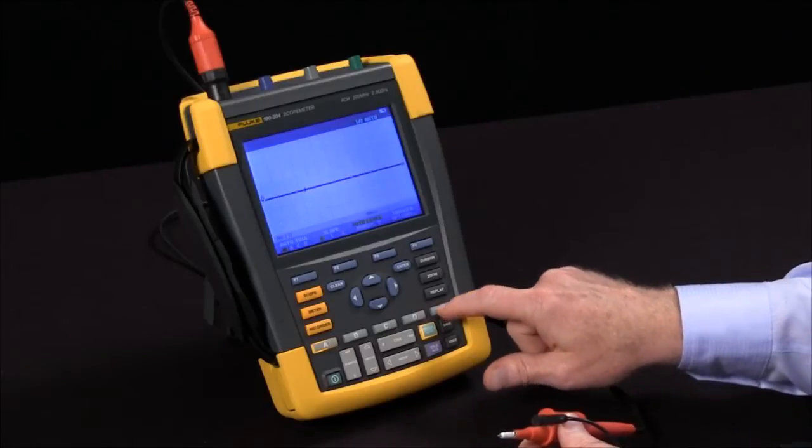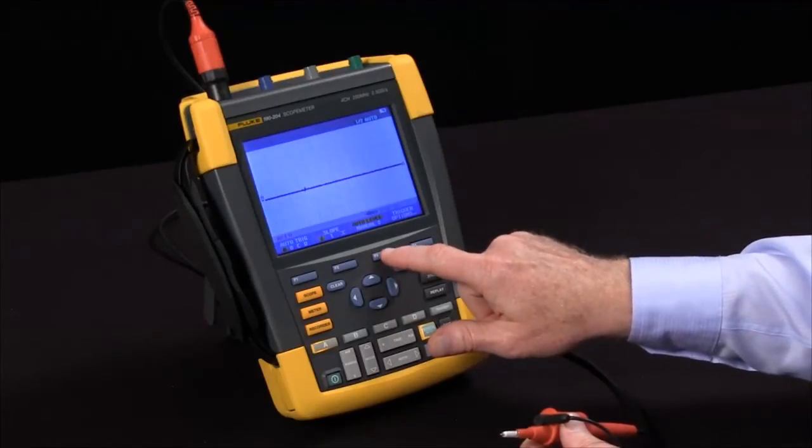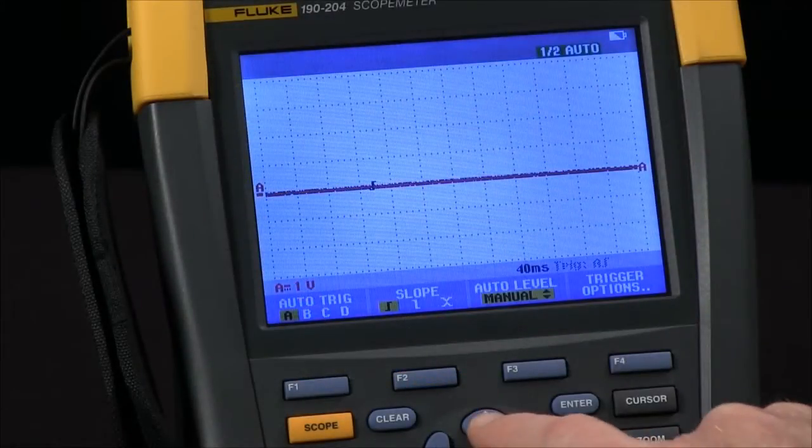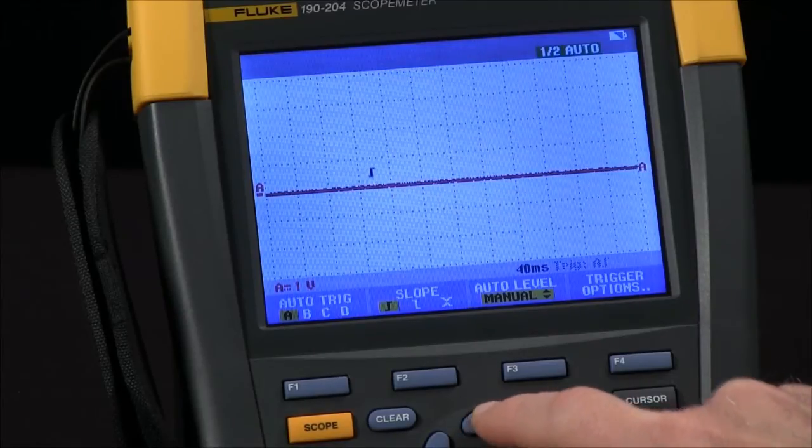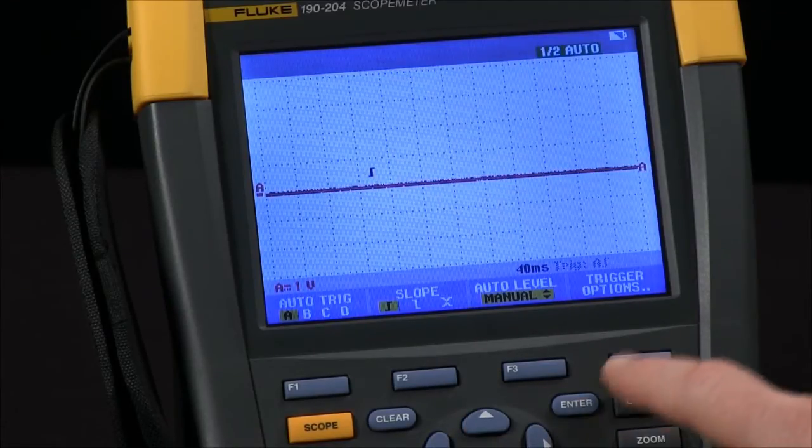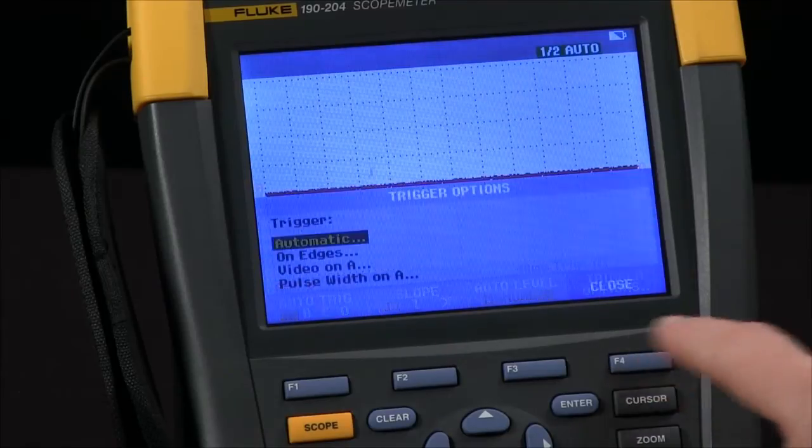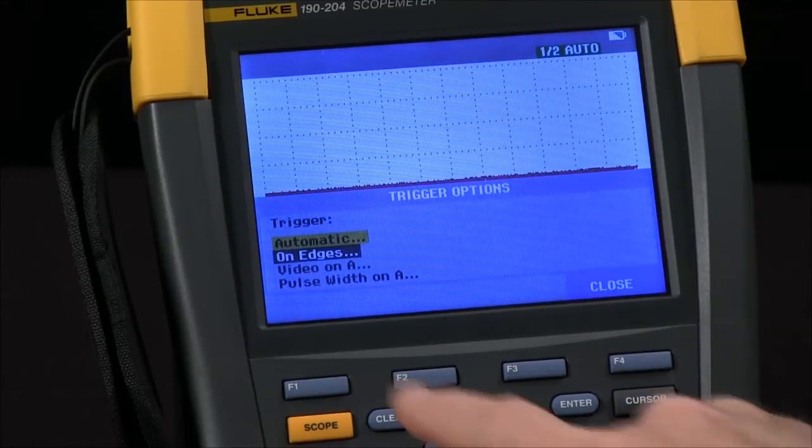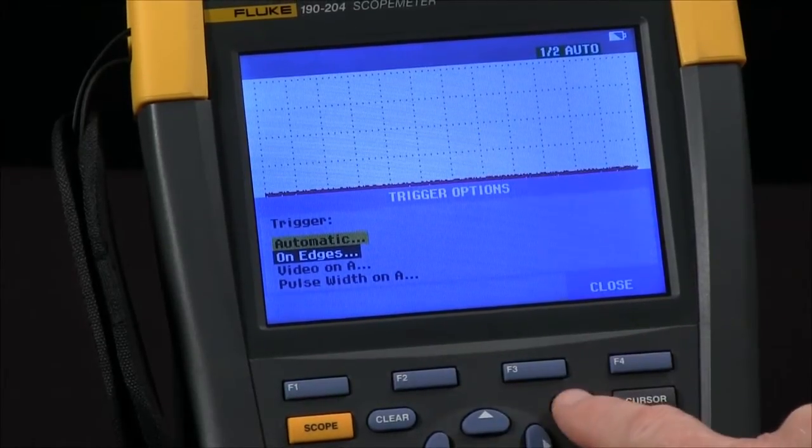Now let's go to trigger. We'll go to manual with the F3 key and move the level up slightly above my baseline. I'll come to trigger options with the F4 key and select edge trigger. Use the enter key.